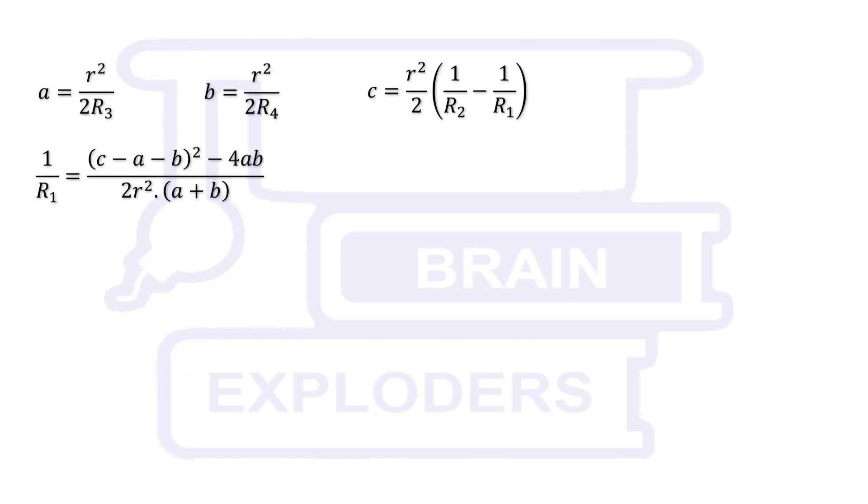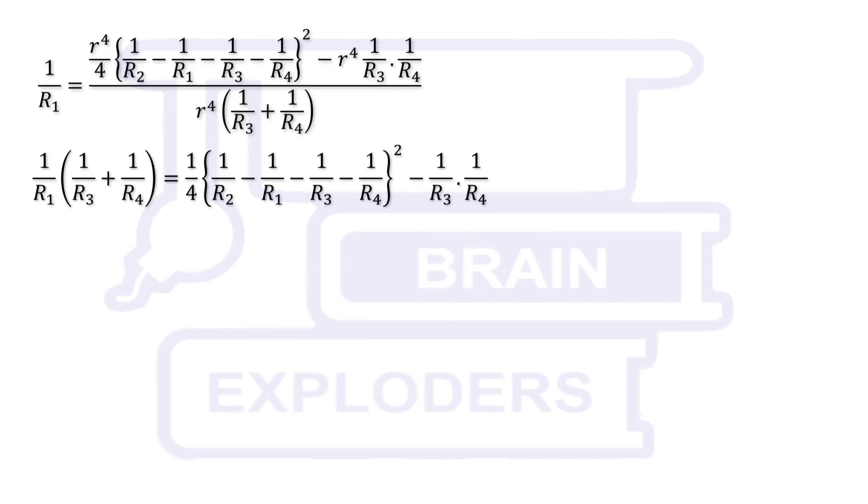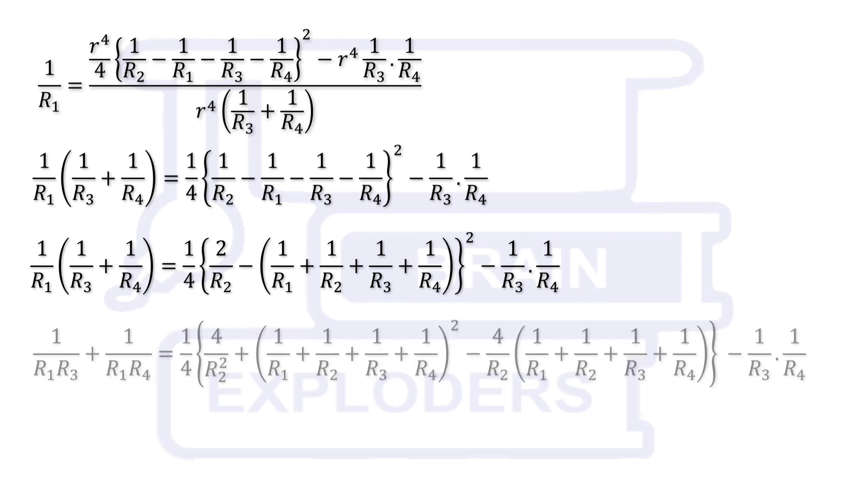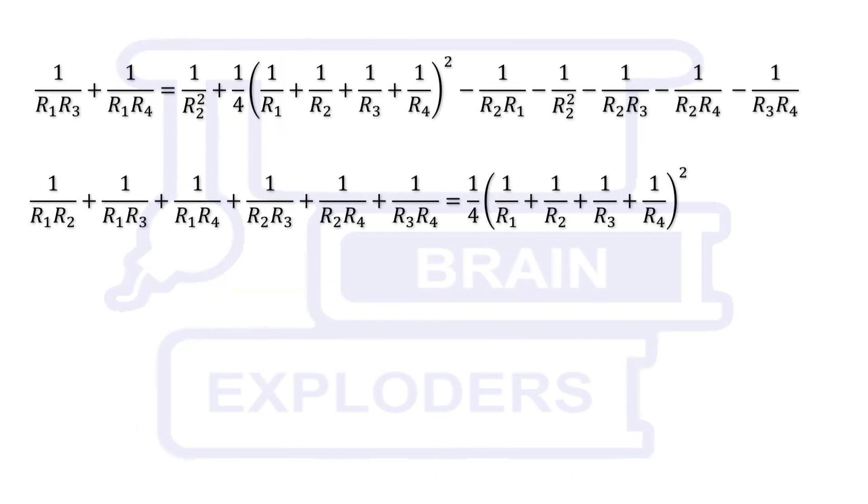R raised to the power 4 is common in both numerator and denominator and it can be cancelled. Do not expand this bracket in ordinary way. Keep the sum of reciprocals of radii in one bracket and do not expand that portion. After cancellation of some terms and rearranging the remaining terms, we get this equation number 5.